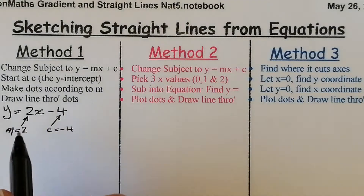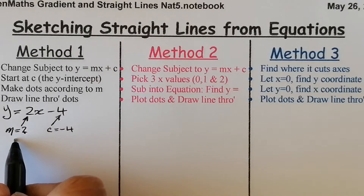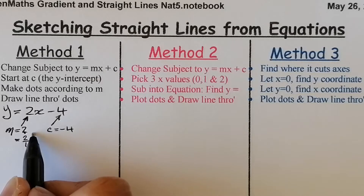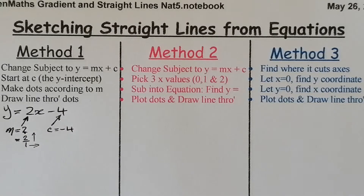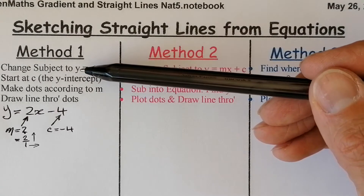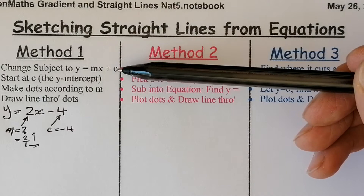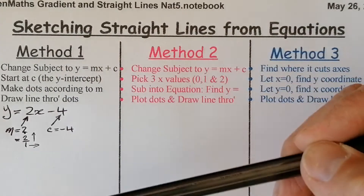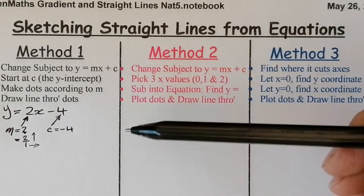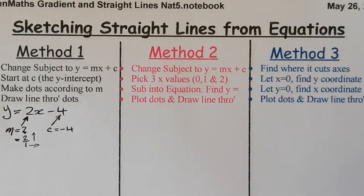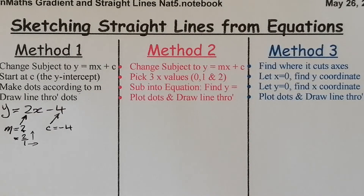A gradient of 2 means that every time I go along 1, I go up 2. Written as a fraction, that's 2 over 1. So Method 1 involves making sure the equation is in y equals mx plus c form, starting at the c value, then making dots according to the gradient movement, and drawing a line through the dots. Let's go to the grid and draw that straight line.